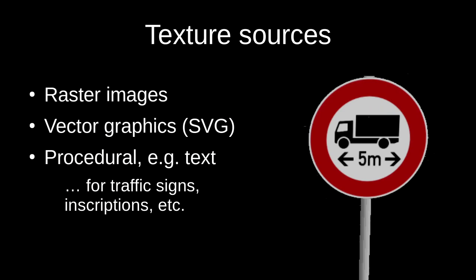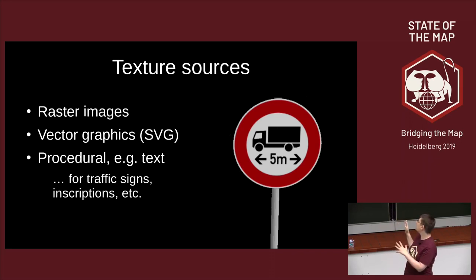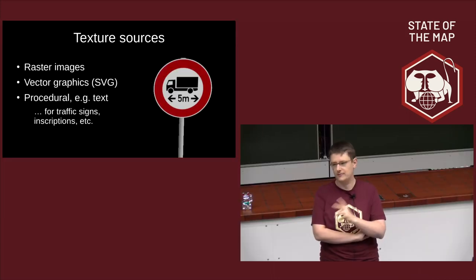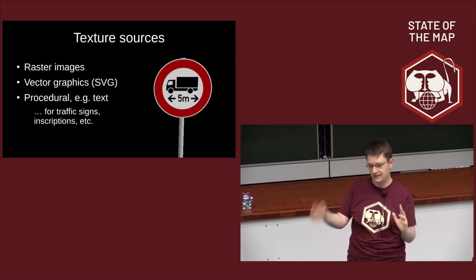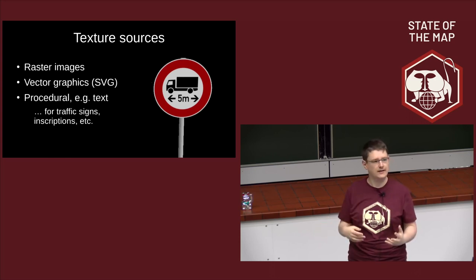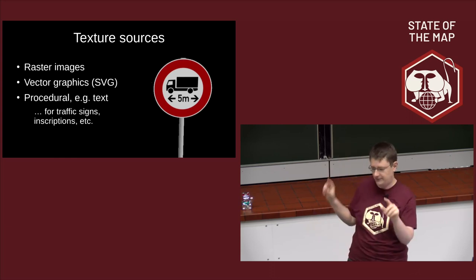Textures in OSM2World are usually raster images — PNG files or JPEG files. But we can also use vector graphics for textures and procedural textures. One recently added type is text textures. For example, in a traffic sign, the number 5 isn't actually part of the image but is written by the client on top of the sign. This is very useful for signs with many different possible texts. For a city entrance sign, you wouldn't want to create an individual image for every city on the planet — instead you look at the OpenStreetMap name tag and write the name onto the sign as needed.